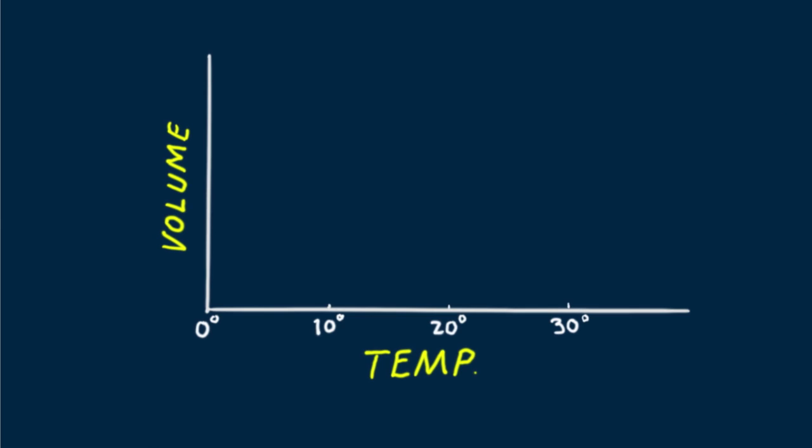Let's return to our volume versus temperature graph. I show in green the thermal expansion without regard to ice crystals. I show in orange the effect of volume due to collapsing ice crystals in the water.